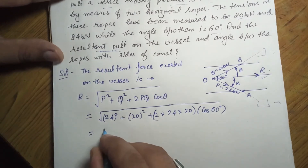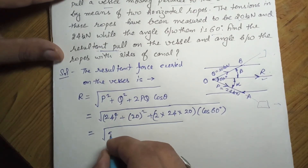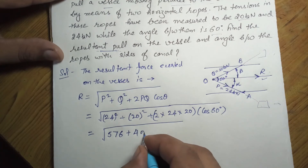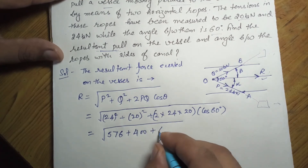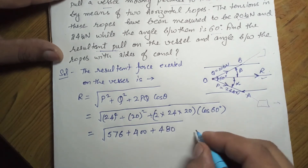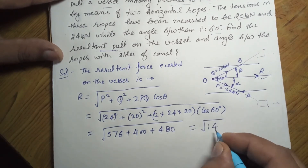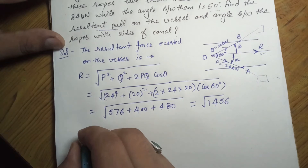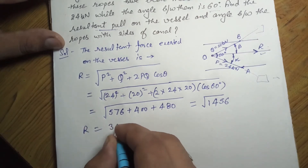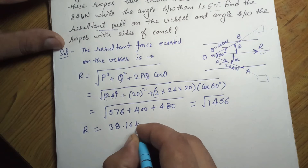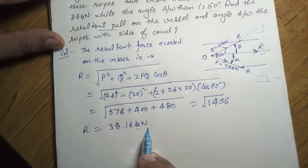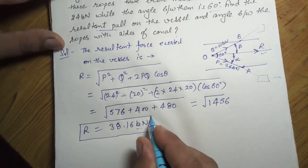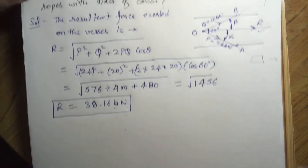Calculating: 24² = 576, 20² = 400, and 2 × 24 × 20 × cos60° = 480. So R = √(576 + 400 + 480) = √1456. Taking the square root, the resultant R equals 38.16 kilonewton. Note the units are kilonewton as given in the problem statement.